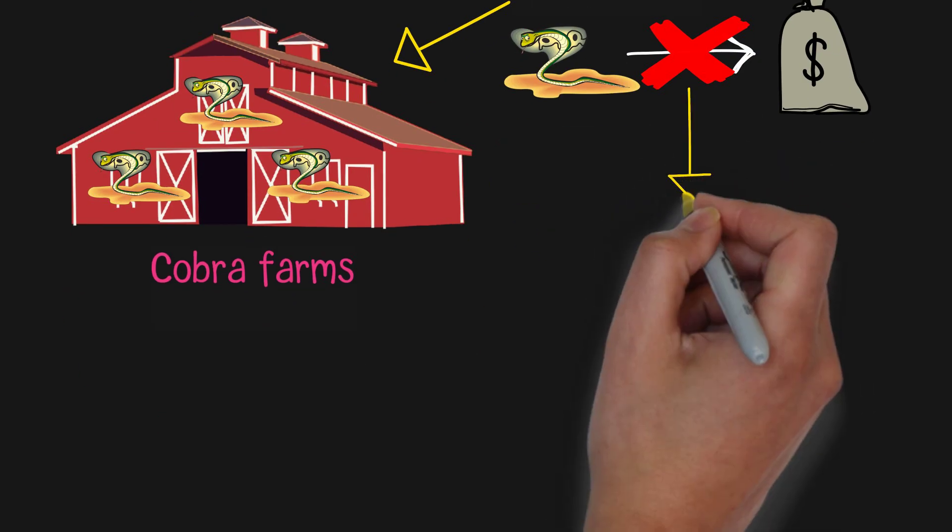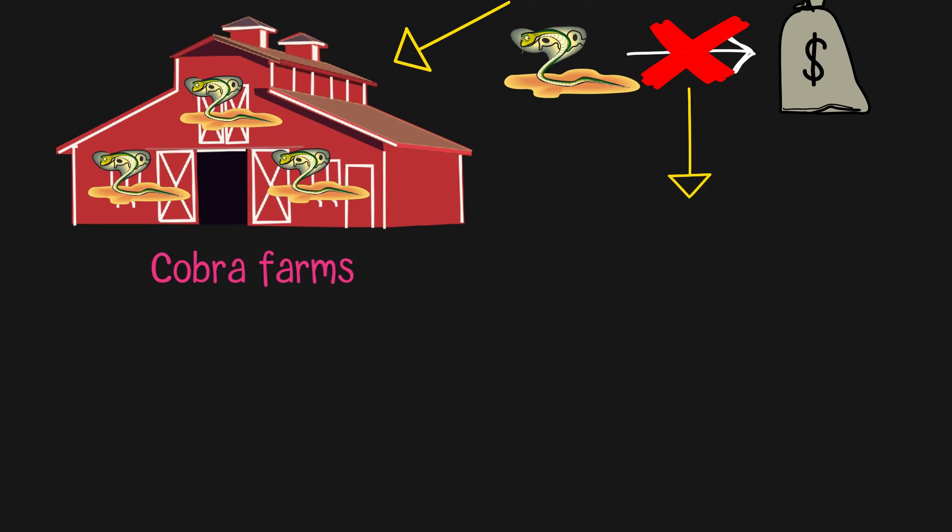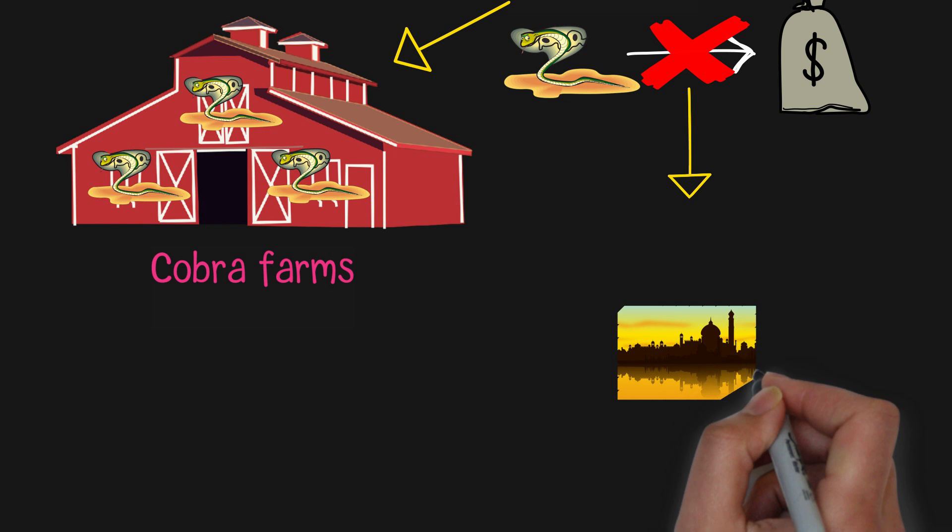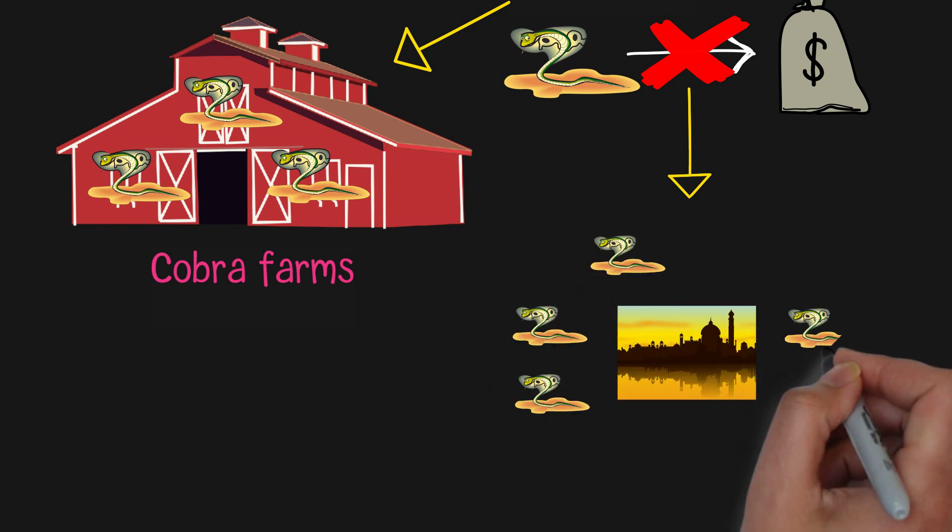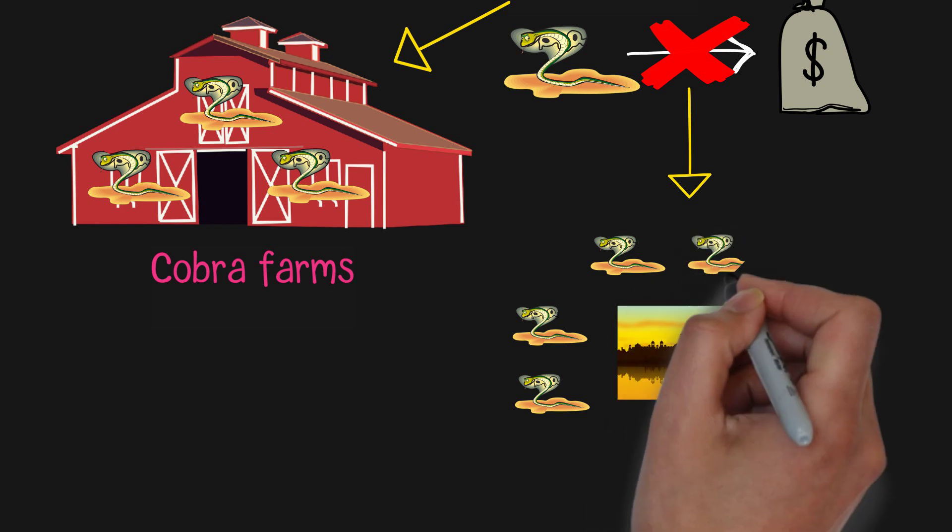Since there were no more rewards to raise cobras, the cobra farmers then released their raised snakes into the city, which exacerbated the cobra infestation, making it even worse than before. The term Cobra Effect is derived from this story.